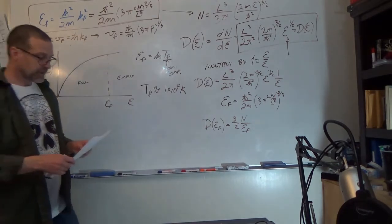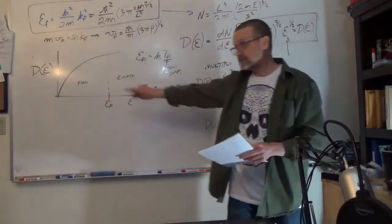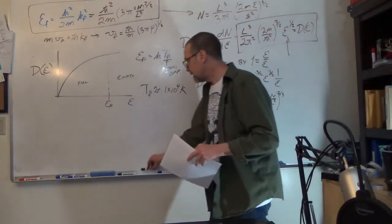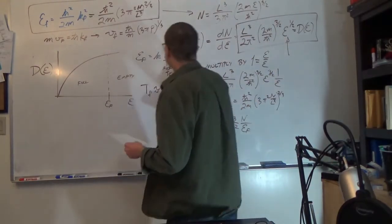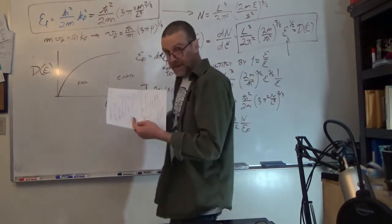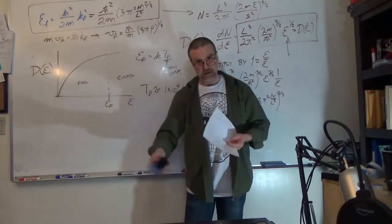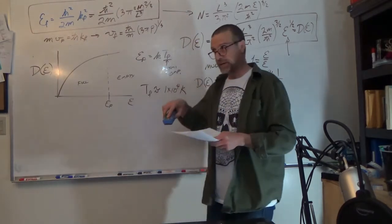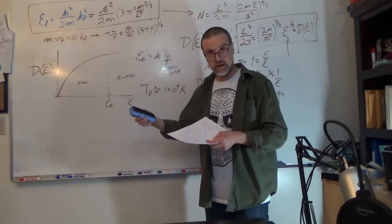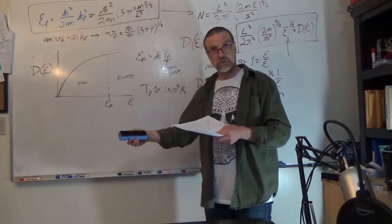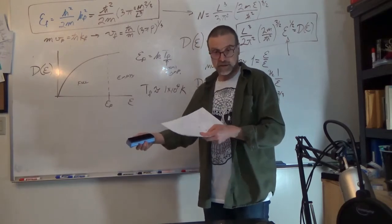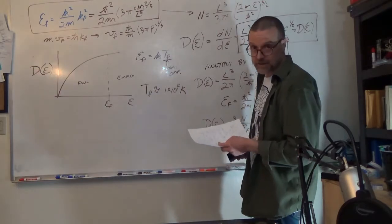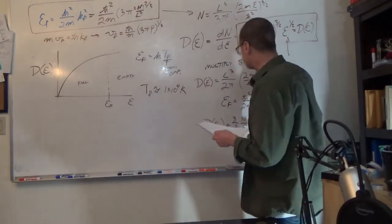Let's look at an application of the density of states: heat capacity. In metals, heat capacity is primarily carried by the electrons, and this is a place where the original free electron approximation completely failed because it didn't take into account quantization or Fermi-Dirac statistics.